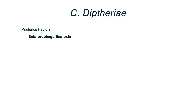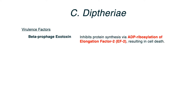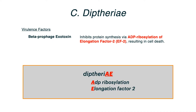As far as virulence factors go, there's a beta-prophage exotoxin. The key buzz phrase that shows up all the time is ADP ribosylation of elongation factor 2. This exotoxin inhibits protein synthesis, leading to cell death. A helpful mnemonic: the word 'diphtheriae' ends in A-E — A for ADP ribosylation and E for elongation factor 2.